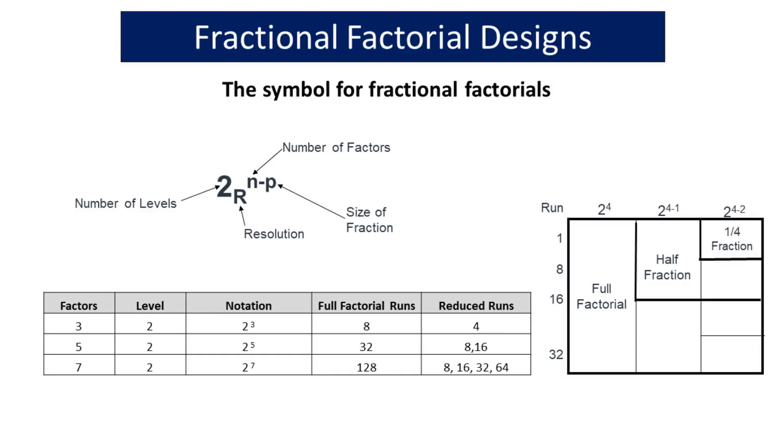The symbol of fractional factorial designs is typically represented as 2^(n-p), where n is the number of factors and p is the size of fraction. This symbol signifies the reduced number of experimental runs required for a fractional factorial design compared to a full factorial design.